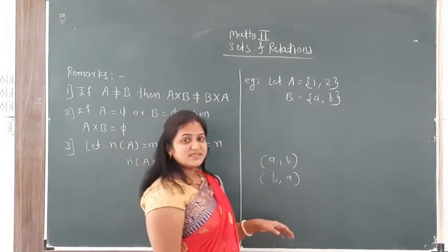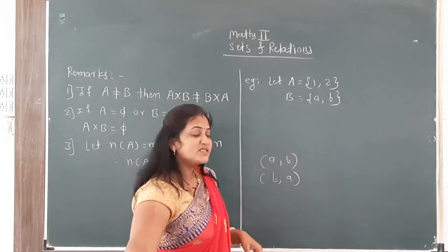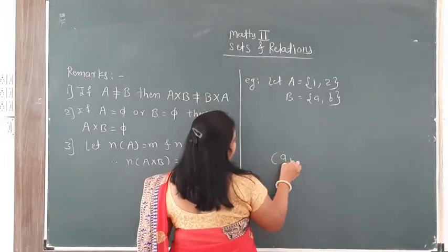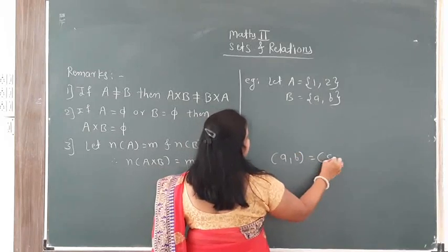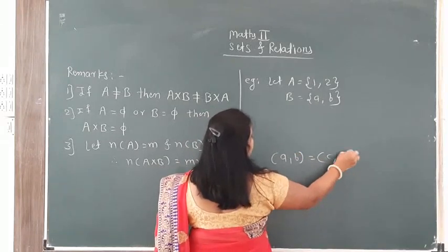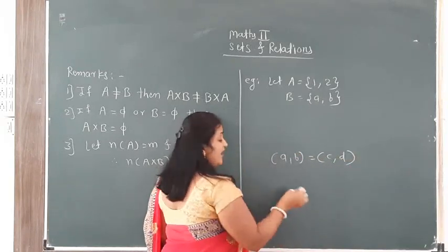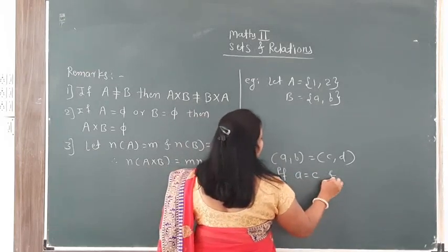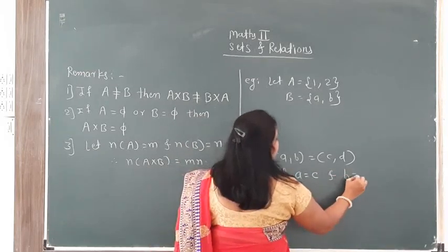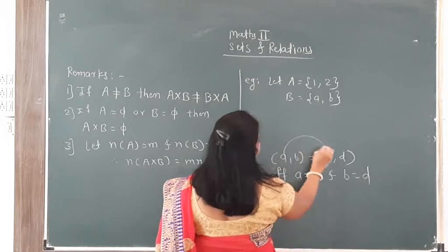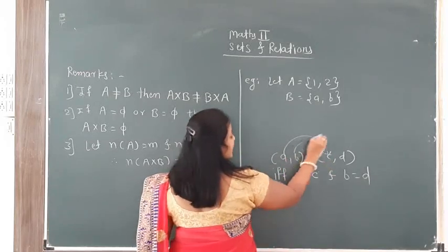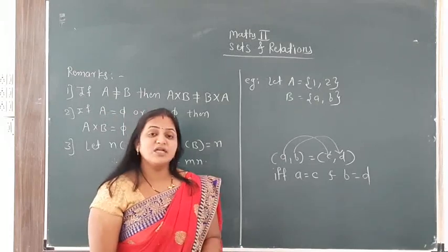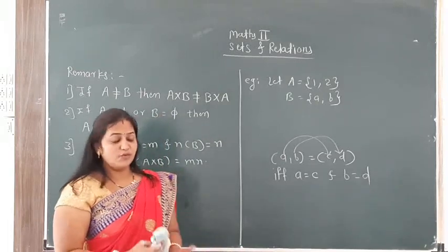Two ordered pairs are equal as follows: if two ordered pairs (A, B) and (C, D) are equal, if and only if A equals C and B equals D. That means the first component equals the first component, and the second component equals the second component. Then we say that these ordered pairs are equal.